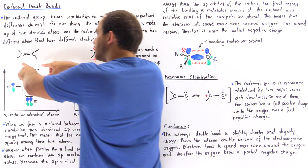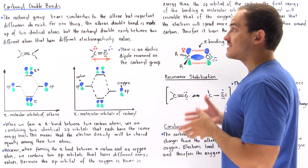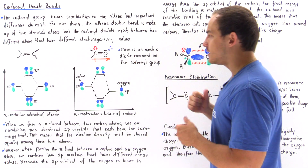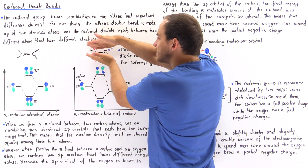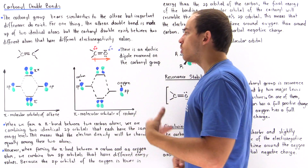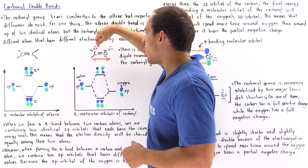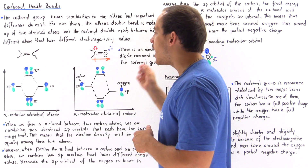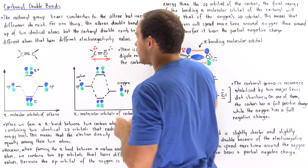Now let's compare the carbon-carbon double bond with the double bond inside a carbonyl group. The carbonyl group contains a carbon attached to two arbitrary groups — this could be an H atom, a methyl group, or any other group. The other side of the carbon has a double bond to oxygen, and the oxygen itself also contains two lone pairs of electrons.